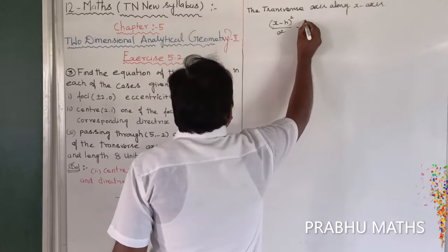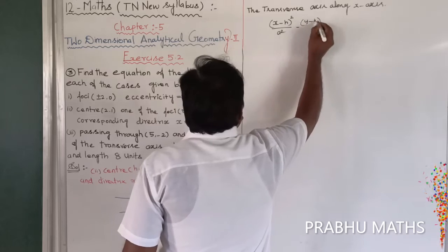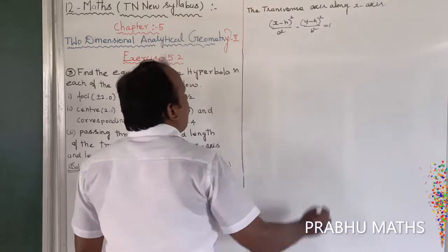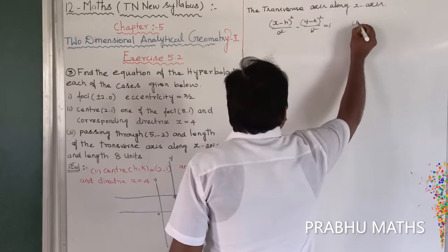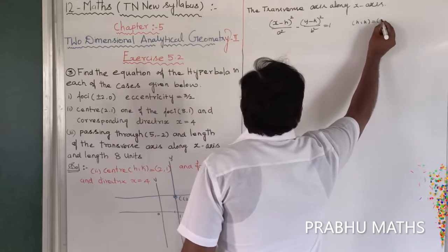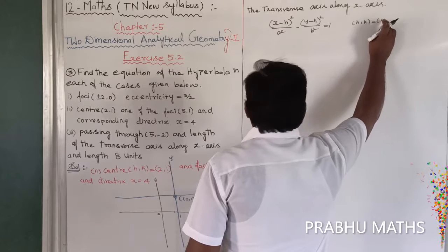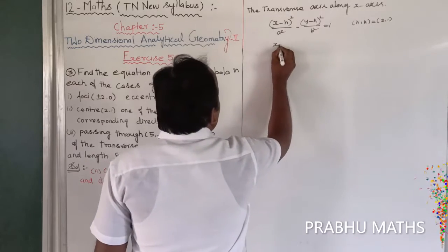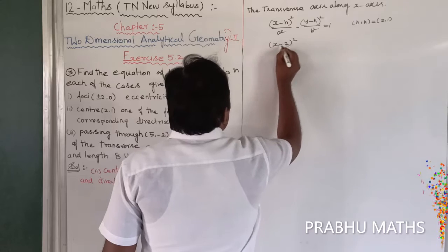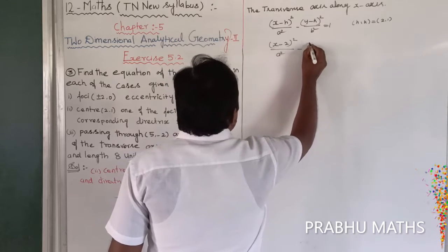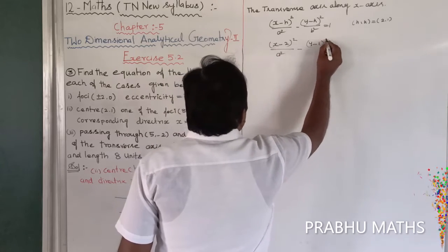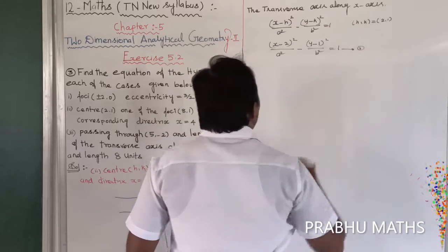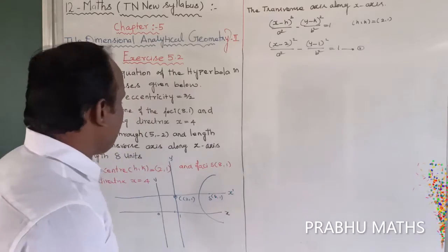The general equation for a hyperbola with transverse axis along x is (x − h)² / a² − (y − k)² / b² = 1. Substituting h = 2, k = 1, we get: (x − 2)² / a² − (y − 1)² / b² = 1. This is equation (1).